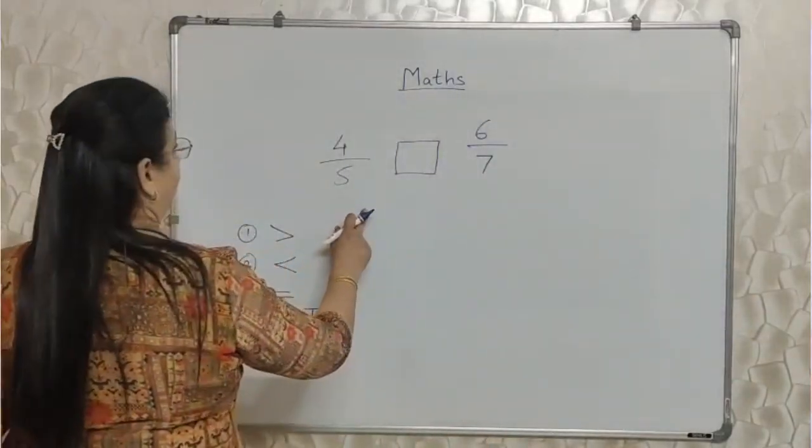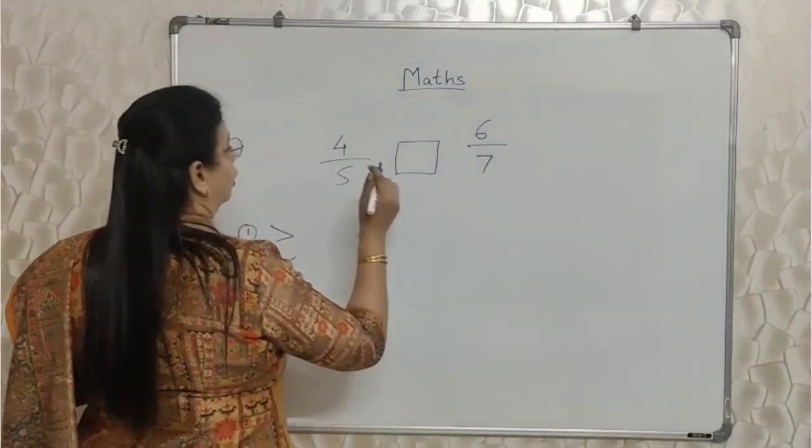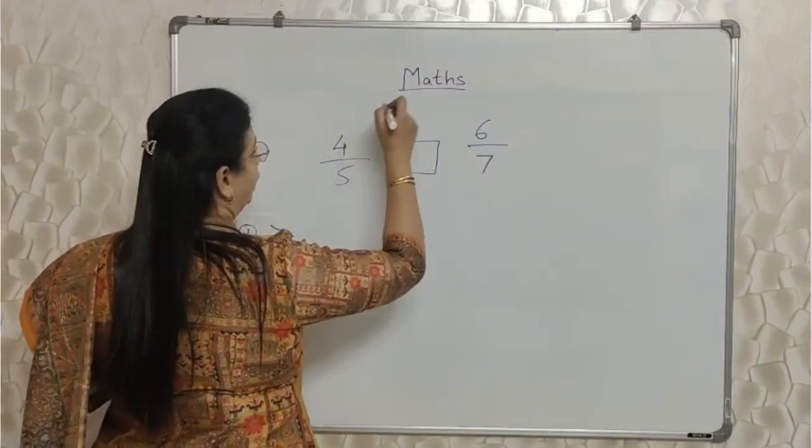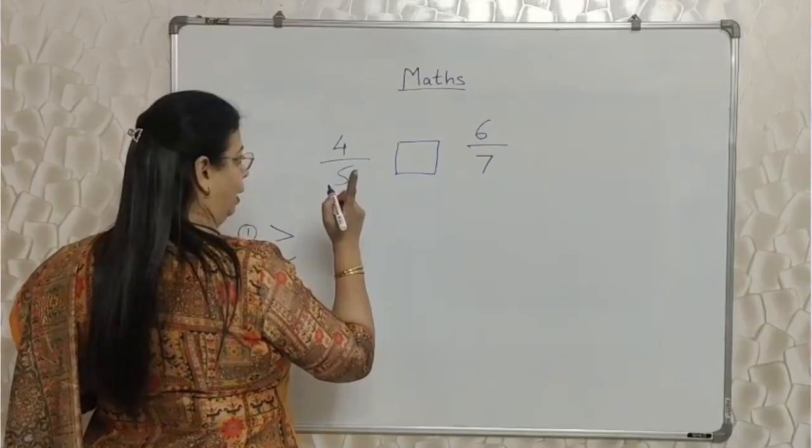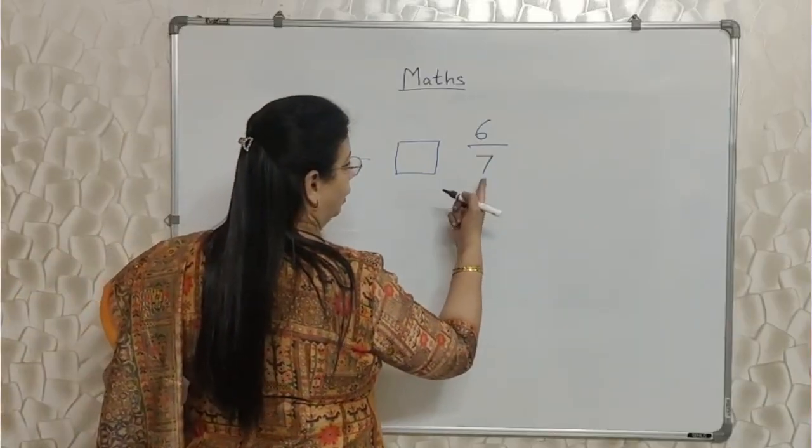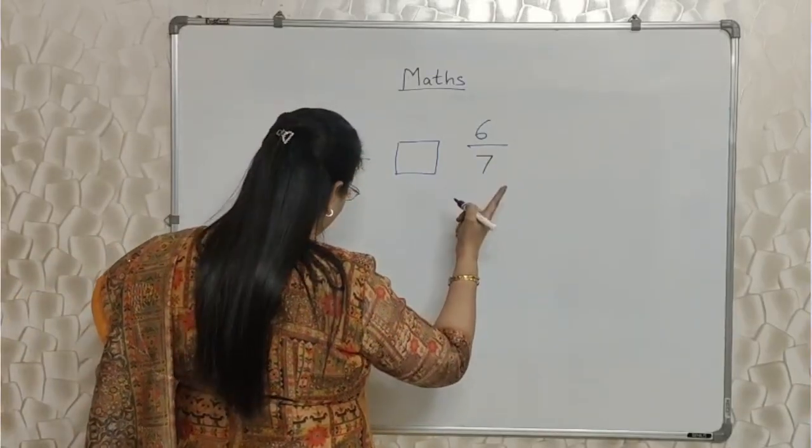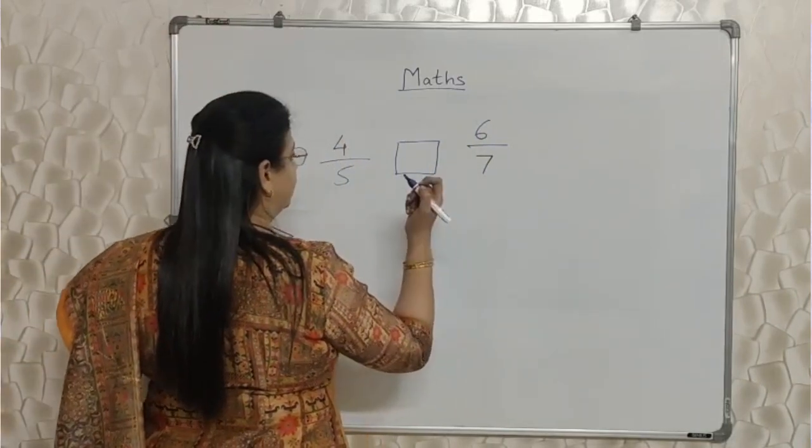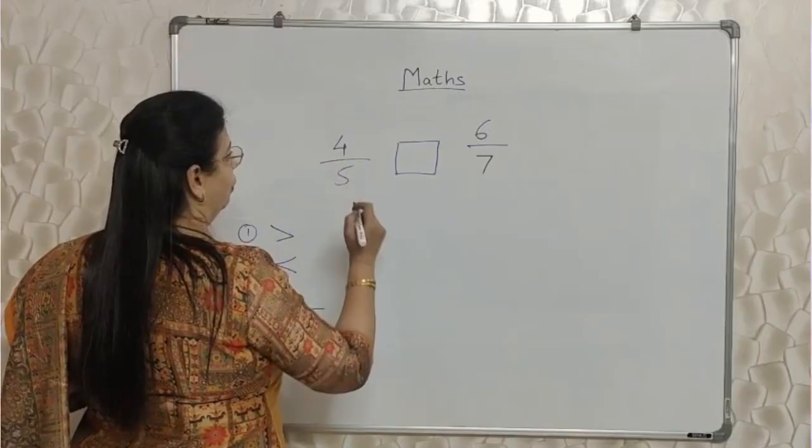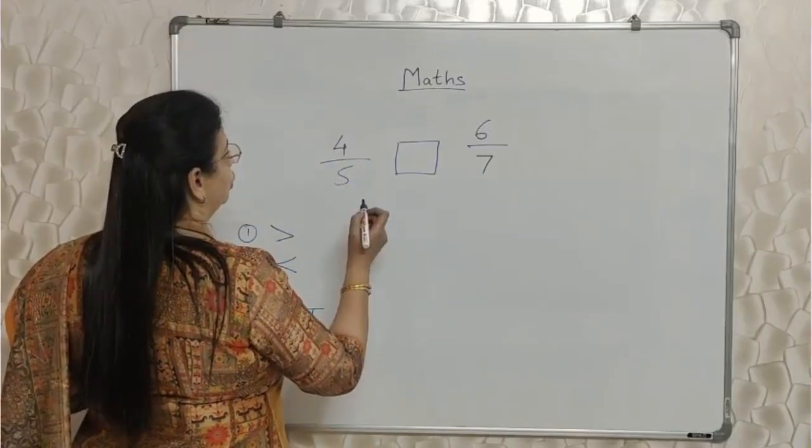Here what do we do? We compare. Denominators are also different, numerators are also different. Now what to do? One method is there to find out the LCM. But again, if we have a little smarter way which will save our time, it will be good for us.